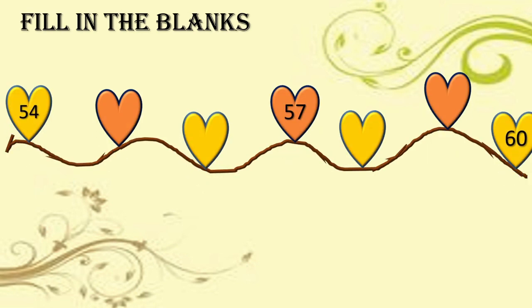Here again, fill in the blanks. There are some leaves with numbers and some leaves are empty — we have to give them the correct numbers. First number is fifty-four, then fifty-five. Good, then fifty-six. Fifty-seven is given. Nice — fifty-eight. Dear children, this is fifty-nine, and the last number is sixty. We know up to sixty.